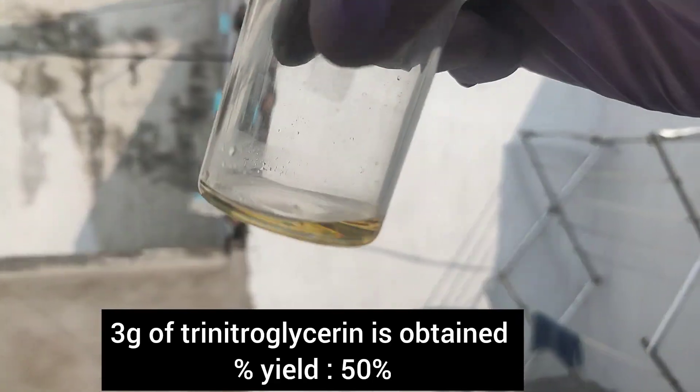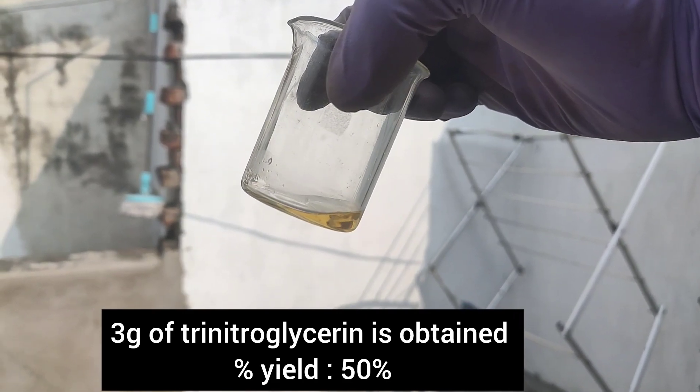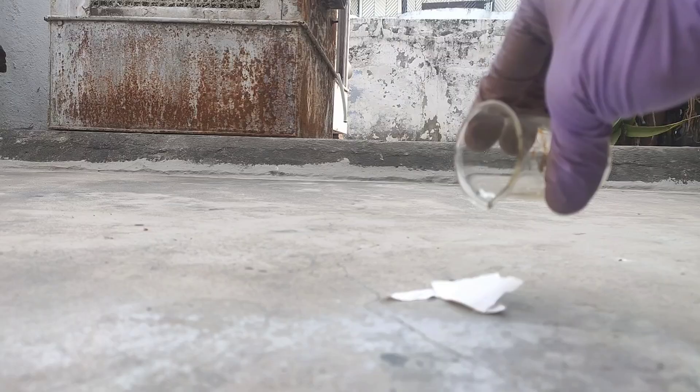After taking the weight of empty beaker, I got to know that I had made 3g of trinitroglycerin which corresponds to a yield of 50%, which is not bad if you look at the reagents that I have used.